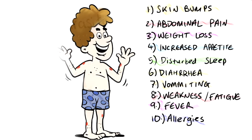Key symptoms which occur in humans when they are affected by parasites include skin bumps, abdominal pain, weight loss, increased appetite, disturbed sleep, diarrhea, vomiting, weakness and fatigue, fever, and allergies. Sometimes parasitic infections can be without any symptoms, or the symptoms only appear after a certain period of time.